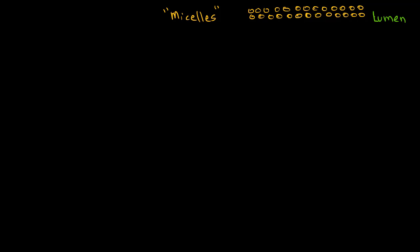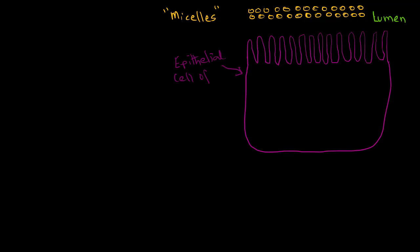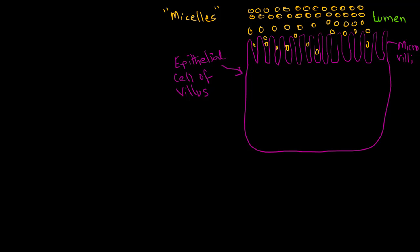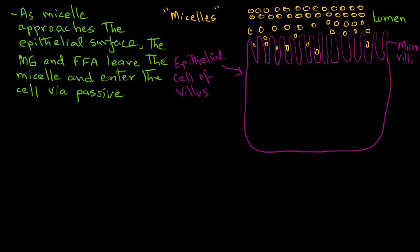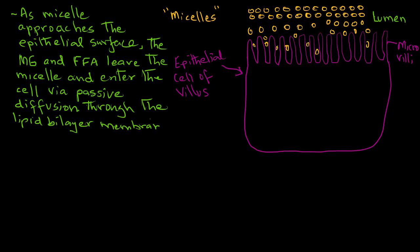Here we have a depiction of the epithelial cell of the villus with the microvilli, and we also show micelles that are water-soluble moving within the lumen and through the microvilli, getting closer to the epithelial cell walls. As the micelles approach the epithelial surface, the monoglycerides and free fatty acids leave the micelle and enter the cell via passive diffusion through the lipid bilayer of the membrane.